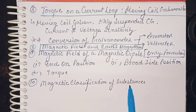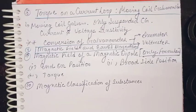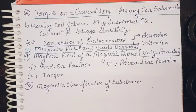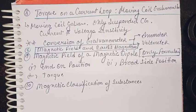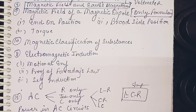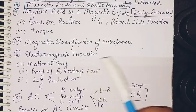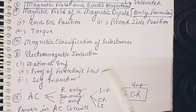Magnetic classification of substances has no derivation. You just have to learn the definitions there, like ferromagnetism and all these definitions. For electromagnetic induction you have to do motional EMF, proof of Faraday's law, and self induction.